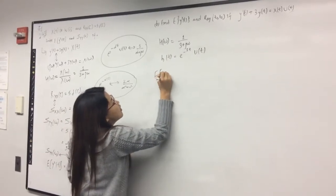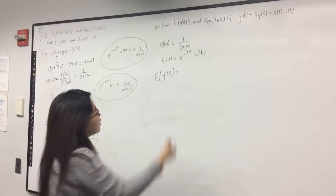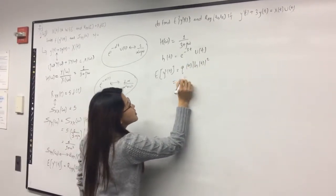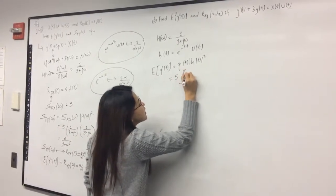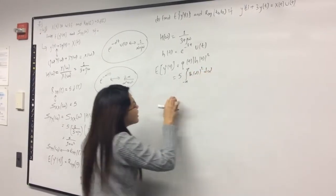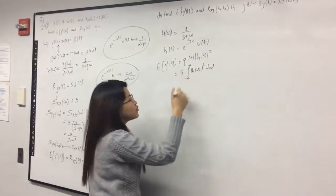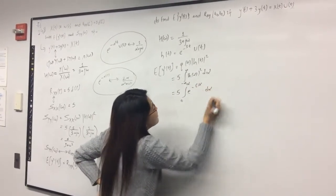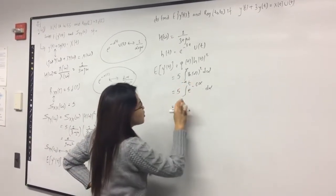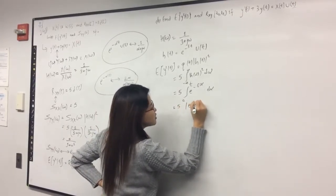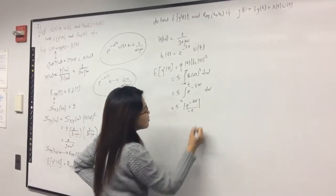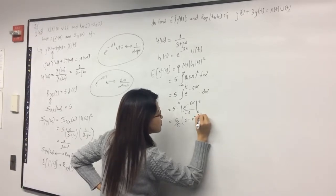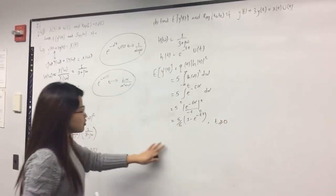E[y²(t)] equals the integral of the white noise intensity φ times |h(α)|² dα. Representing the intensity as φ = 5 and integrating from 0 to t (since h(t) = e^(−3t)u(t)), we get the integral of e^(−6α) dα from 0 to t, which evaluates to [e^(−6α)/(−6)] from 0 to t. This gives E[y²(t)] = (5/6)(1 − e^(−6t)) for t ≥ 0.